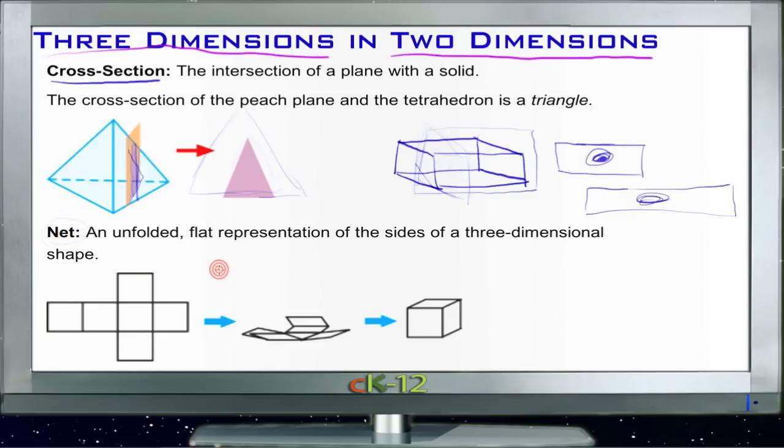And then the other common way of describing it would be what's called a net. And a net is a drawing of what would happen if you were to take your three-dimensional figure and unfold it so that each of the sides of the figure were represented by a full shape in your net.